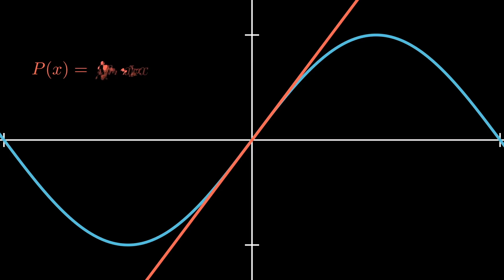Visually, this is a line whose slope is equal to the first derivative of sine x at zero, or when x equals zero, which ends up equaling one.